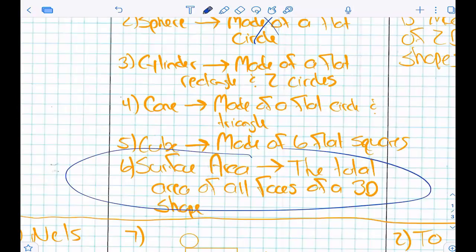To find surface area, you find out how many faces a shape has. Find the area of each face. Add them together, done.